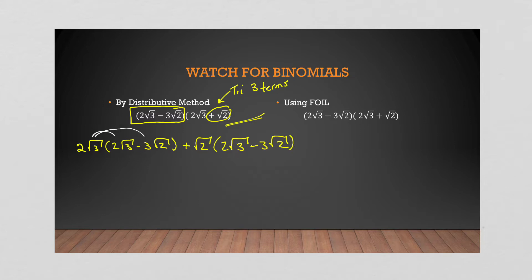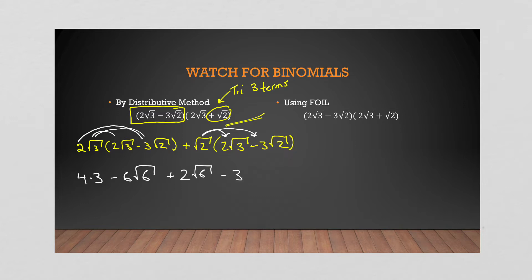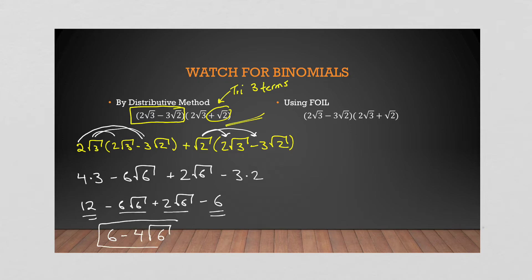We multiply in here and in here the same way. Two times two is four, and root three times root three is three, so that simplifies right up. Then two times negative three is negative six, and root three times root two is root six. Next, we get plus two root six, and then minus three and root two times root two is just two. Now simplifying: twelve minus six root six plus two root six minus six. Grouping like terms gives us six minus four root six.